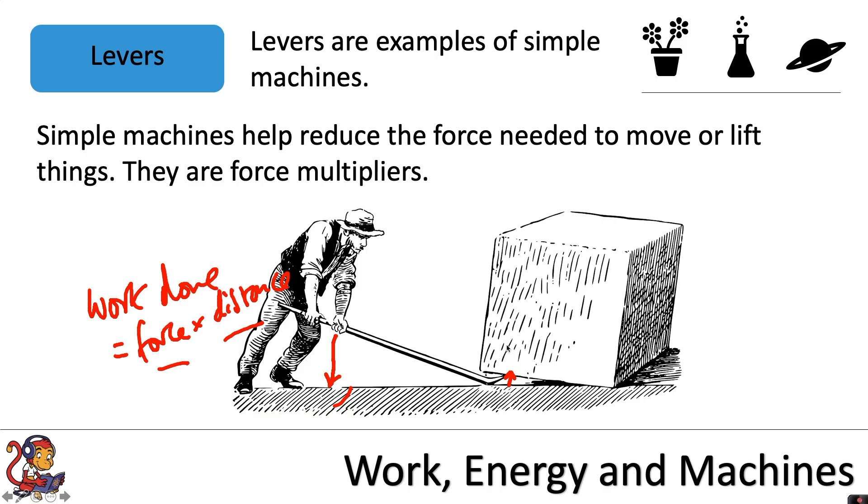So here, there will be a much larger force applied to the box to lift it upwards. This is why we call it a force multiplier. The man can apply a small force across a larger distance here. And the box will move up with a larger force across a smaller distance. And at both ends, the work done will be the same.